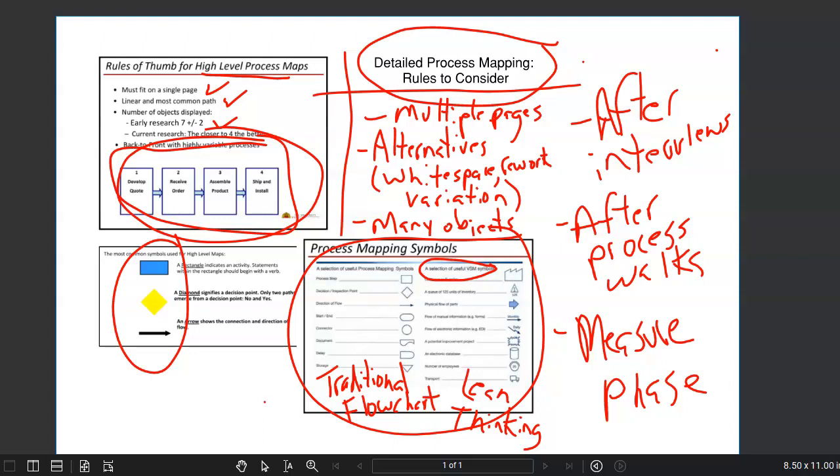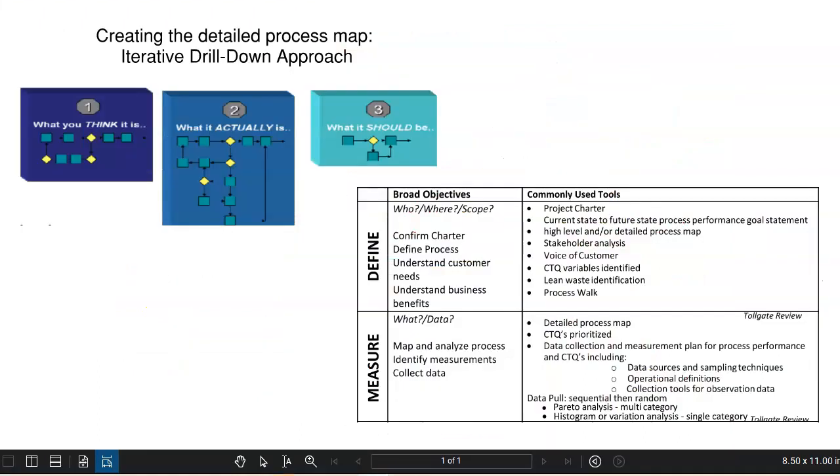Another great thing about detailed process mapping is that you can take that current state detailed process map and then start to hypothesize what a future state may look like where a more simplified version of future state is drawn out. And we do an as is as compared to a to be version of the detailed map, a great way to start to visualize what future state may look like. So we'll update detailed process maps as we identify what the solutions are. We update detailed process maps in the control phase when we've implemented those solutions and we have a good understanding of what the future state condition is like.